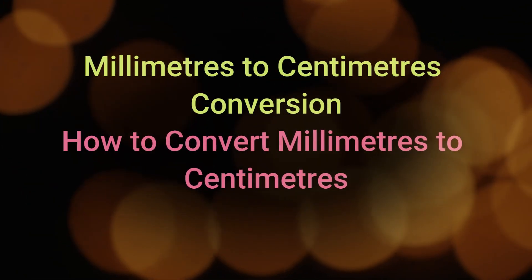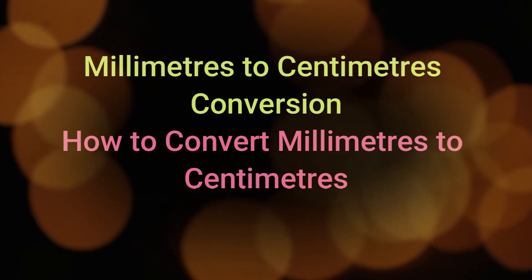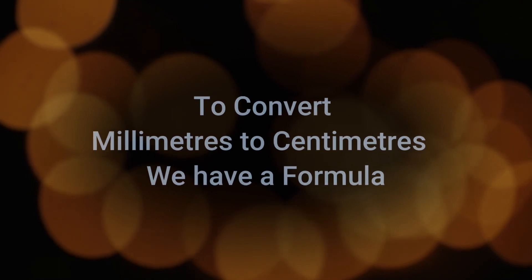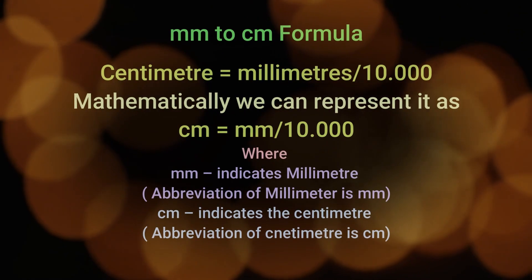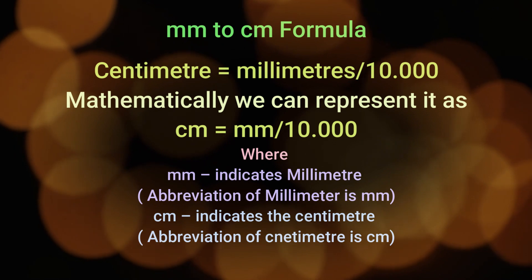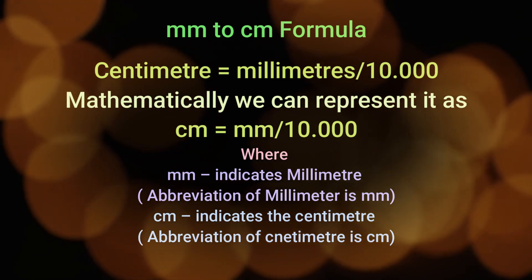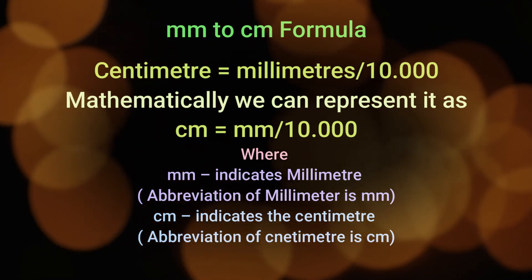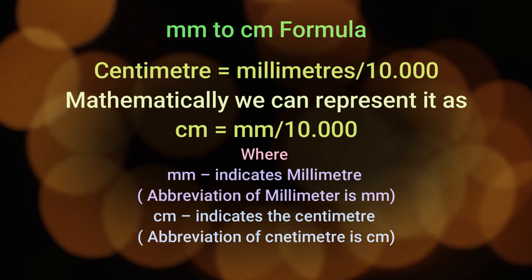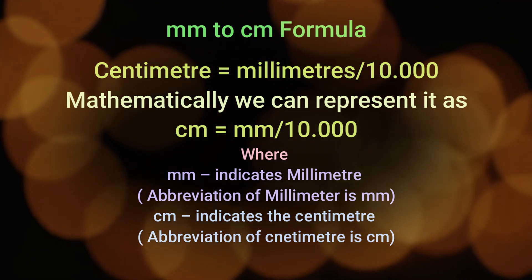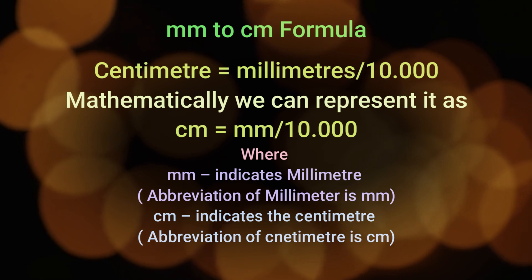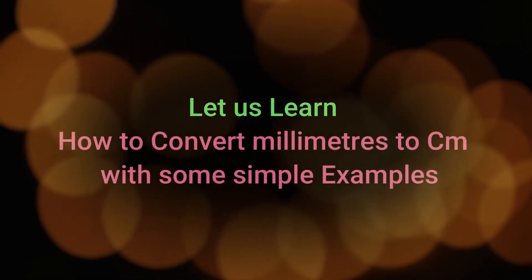Millimeters to centimeters conversion — how to convert millimeters to centimeters. To convert millimeters to centimeters, there is a formula: centimeter is equal to millimeter divided by 10. Mathematically, it can be represented as cm = mm / 10, where mm is millimeter and cm is centimeter. Let us learn how to convert millimeters to centimeters with some simple examples.